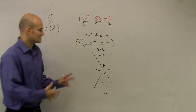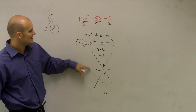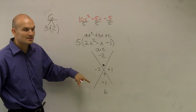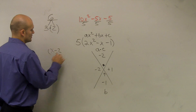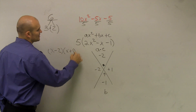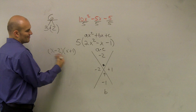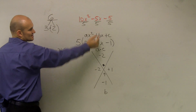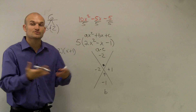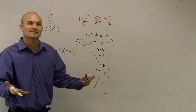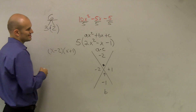A lot of students will automatically say those are your two binomial answers and write x minus 2 times x plus 1. But if you multiply that out, it does not equal our expression, because x times x does not give you 2x squared. Factoring doesn't change the values — we're just rewriting as a product, so the factored form must equal the original.